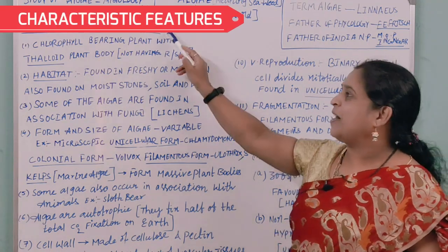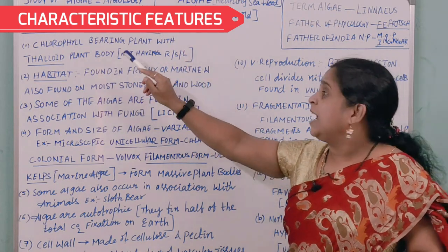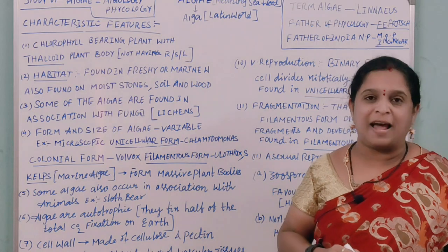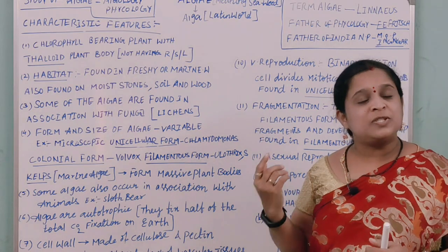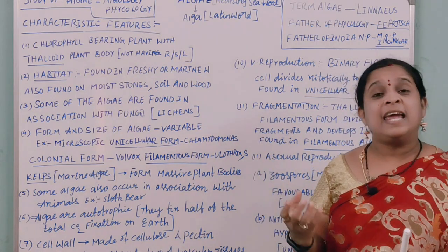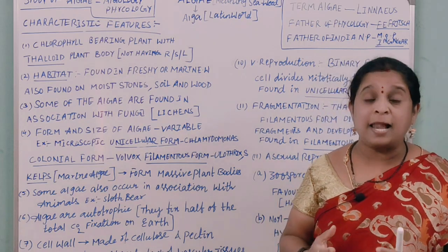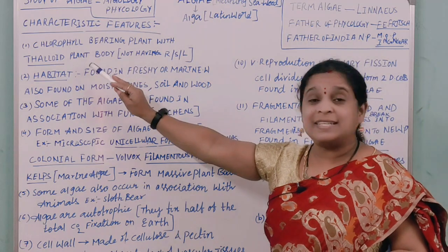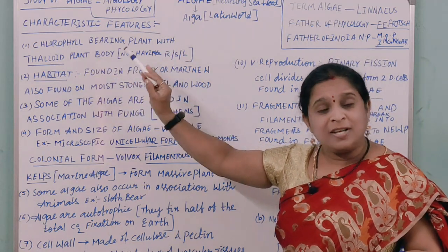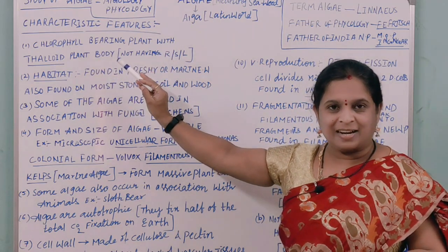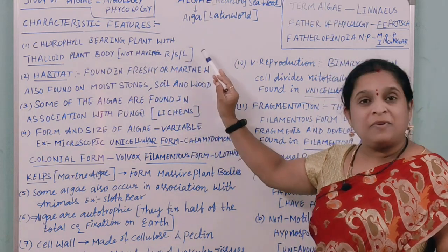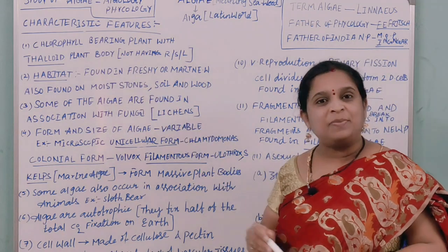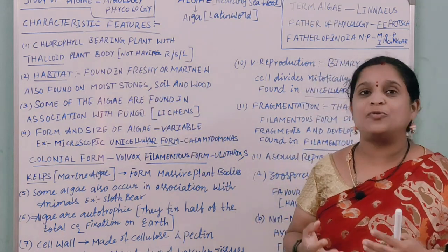Let us look at the characteristic features of algae. The first one is that it is a chlorophyll-bearing plant with a thalloid plant body. Algae contain chlorophyll which helps in the process of photosynthesis. The structure is thalloid, meaning we cannot see a differentiation of roots, stem, and leaves.